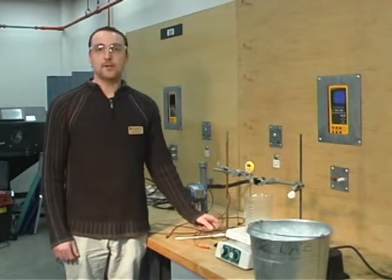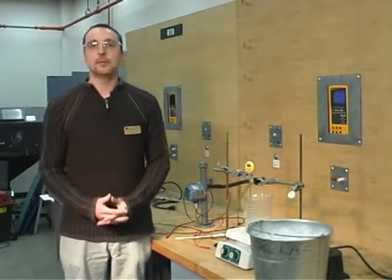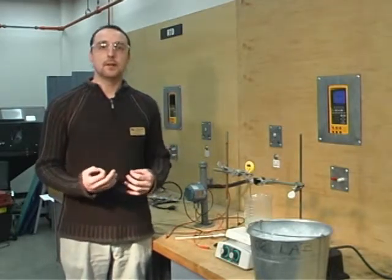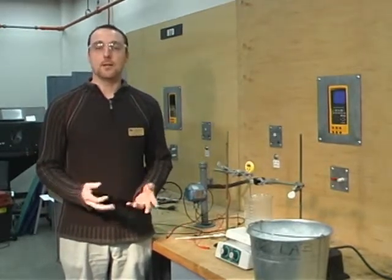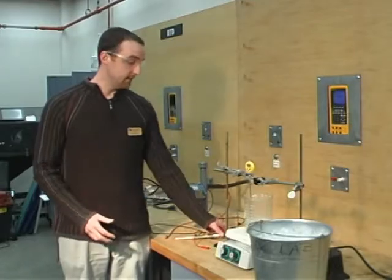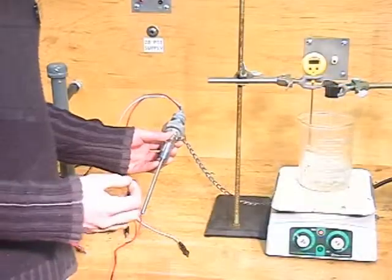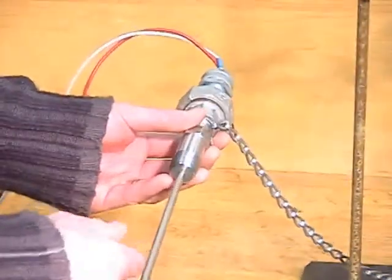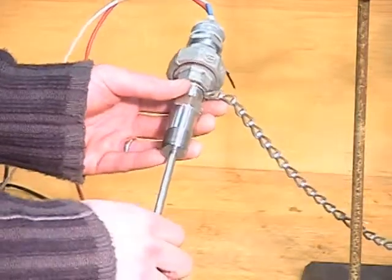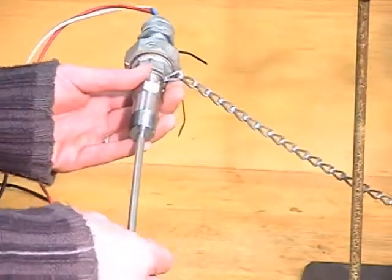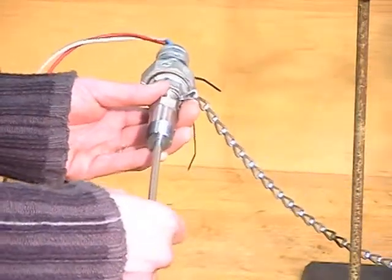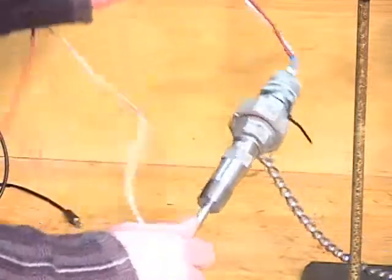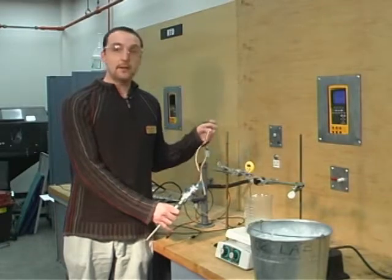For the first part of this lab, we're going to be using a J-type thermocouple. A J-type thermocouple is based on a principle by Thomas Seebeck, which is called the Seebeck effect. Two dissimilar metals will create an electromotive force. This electromotive force is the difference that will be outputted in millivolts. The metals that will be used today in a J-type thermocouple are iron and constantan.